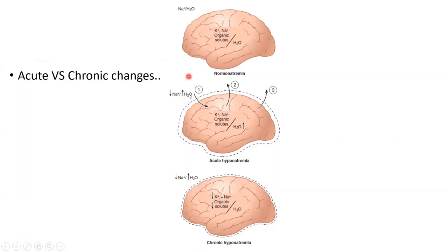SIADH is one example where this would happen. When you have acute hyponatremia, what happens? Number one, it's dilute, so water will - osmosis - water will enter the brain cells where it finds more solute.